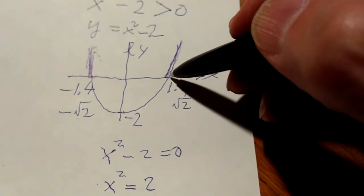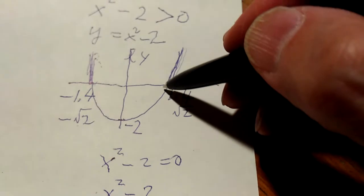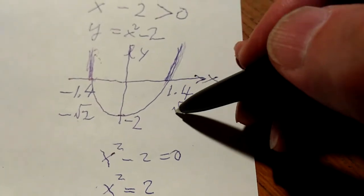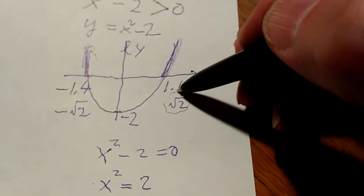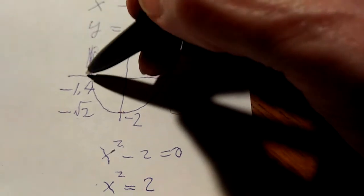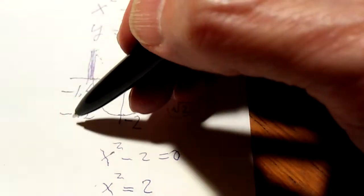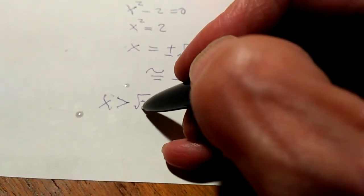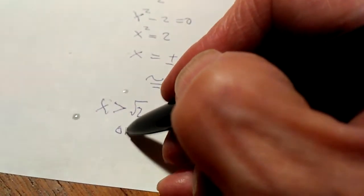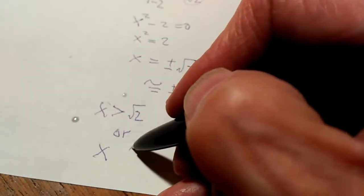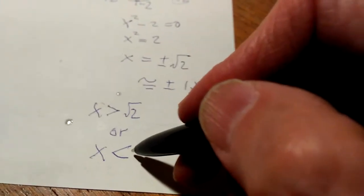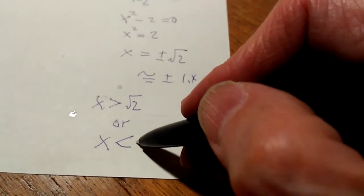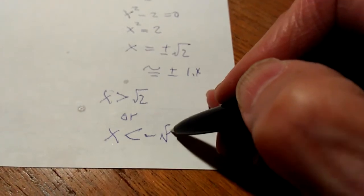For this positive part, x is larger than root 2. For this other positive part, x is less than negative root 2. Therefore the answer is x larger than root 2 or x is less than negative root 2.